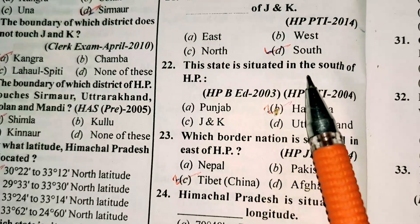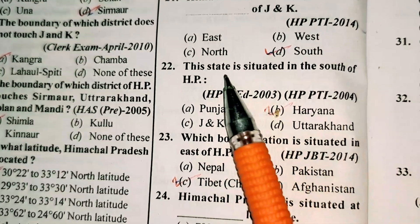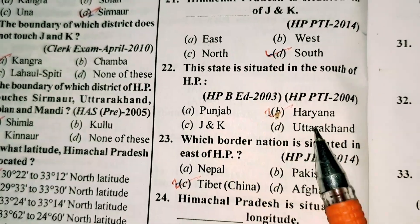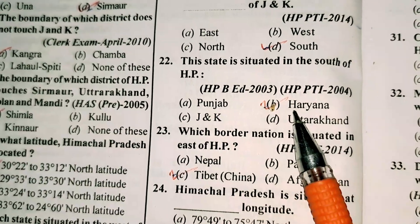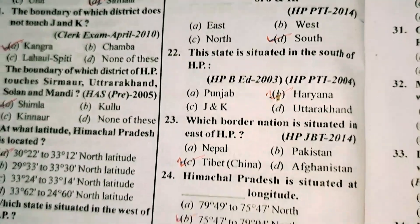Which state is situated in the south of Himachal Pradesh? Option B is correct — Haryana.